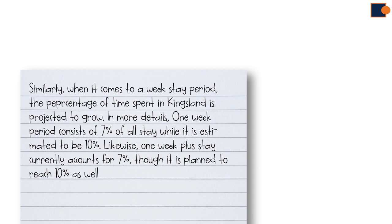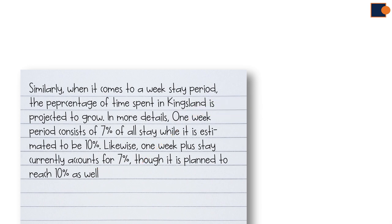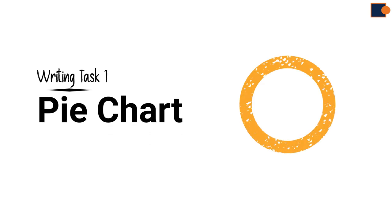It continues by stating that one week plus stay currently accounts for 7%, though it is planned to reach 10% as well. Again, it is supported with current and future period data. The last phrase 'as well' pinpoints the fact that the previous item — the one week stay — will also reach 10%. Now we have finished writing a whole pie chart essay from scratch, and it is your turn to make improvement by making more practice.